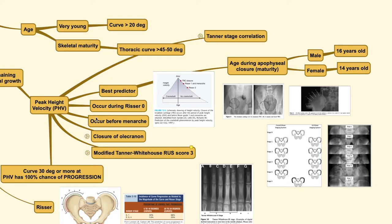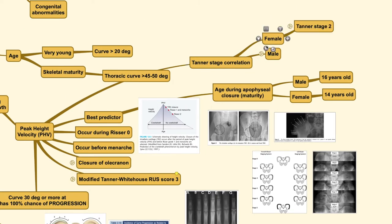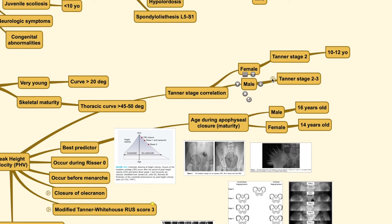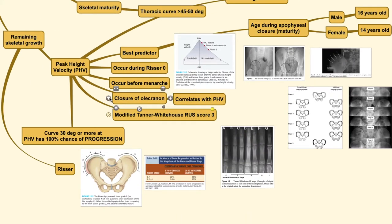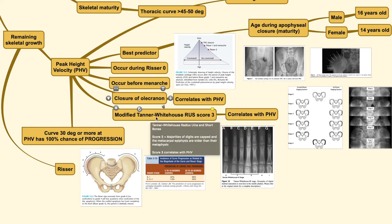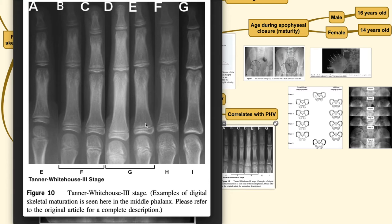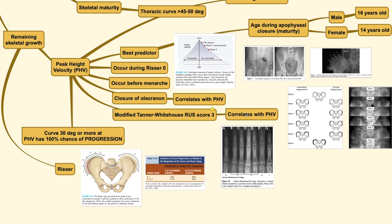Peak height velocity is also related to Tanner staging: in females it is associated with Tanner stage 2, and in males with Tanner stage 2 or 3, around 11 to 15 years old. You could also assess olecranon closure, as closure of the olecranon growth center correlates highly with PHV. Another tool is the Tanner-Whitehouse radius, ulna, and short bones scoring system — if the score reaches 3, where most of the digits are capped and the metacarpal epiphysis is wider, this also correlates with PHV.